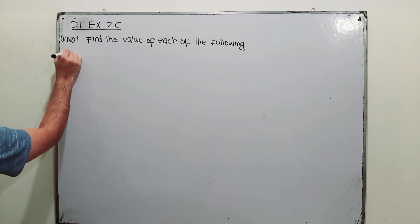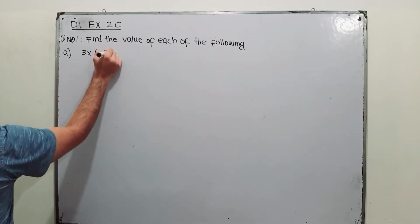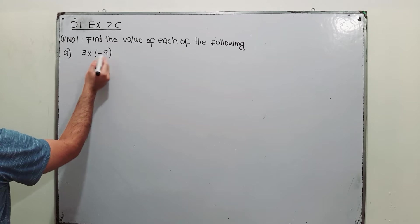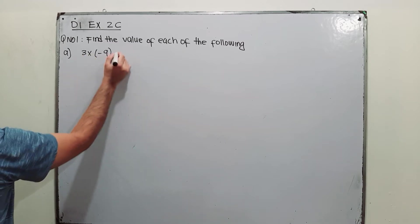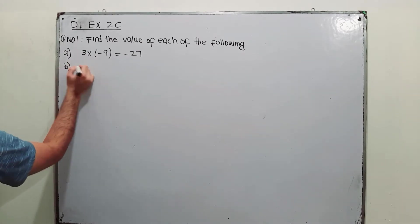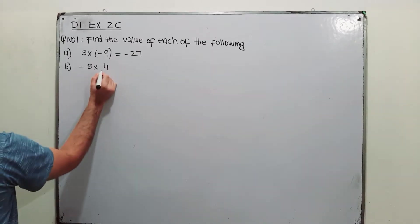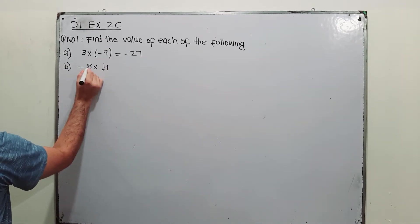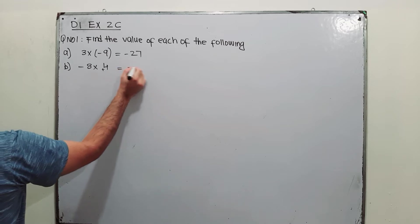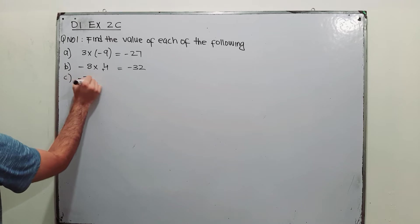Question number one from Exercise 2C says: find the value of each of the following. Part a is 3 multiplied by minus 9 — open the brackets, minus 9 into 3 is minus 27. Part b is minus 8 multiplied by 4; this 4 is positive and this 8 is negative, so minus 8 into 4 is minus 32.